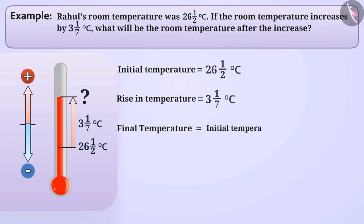Let's find the result of 26, 1 by 2 plus 3, 1 by 7. First, we will express the rational number as the numerator divided by denominator. The number 26, 1 by 2 can be expressed as 53 by 2 and 3, 1 by 7 as 22 by 7. Now we will add them.